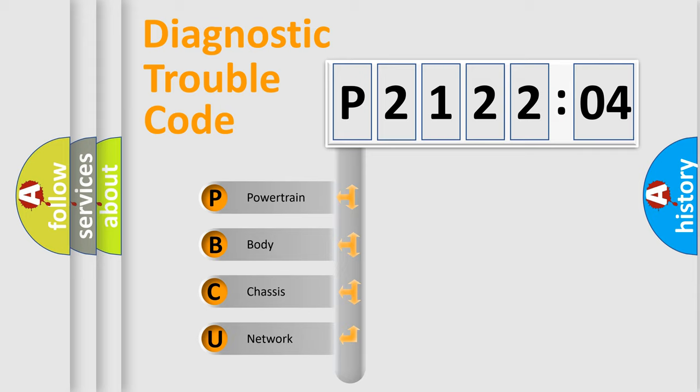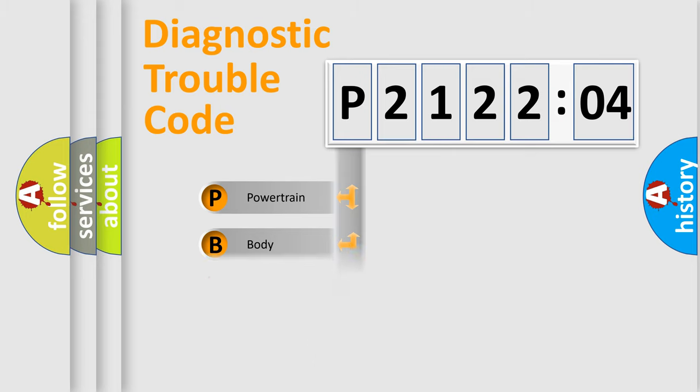If the second character is expressed as zero, it is a standardized error. In the case of numbers 1, 2, or 3, it is a manufacturer-specific expression of the car-specific error.